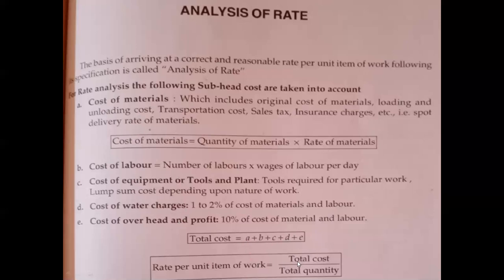Cost of water charges is 1–2% of cost of materials and labors. After calculating these, 1–2% will be the water charge and profit will be 10% of the total cost. If we add all those things, whatever we get is the total cost. Rate per unit item of work is total cost divided by total quantity. This rate analysis should give the rate for 1 cubic meter or 1 square meter or per number.